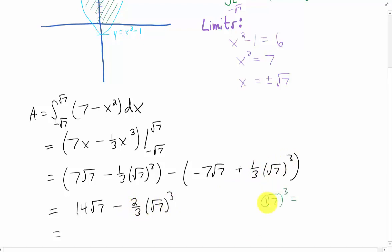We can simplify further. (√7)³ can be written as (√7)² × √7, which equals 7√7. Turning this into 7√7 gives us (14/3)√7 for that term.